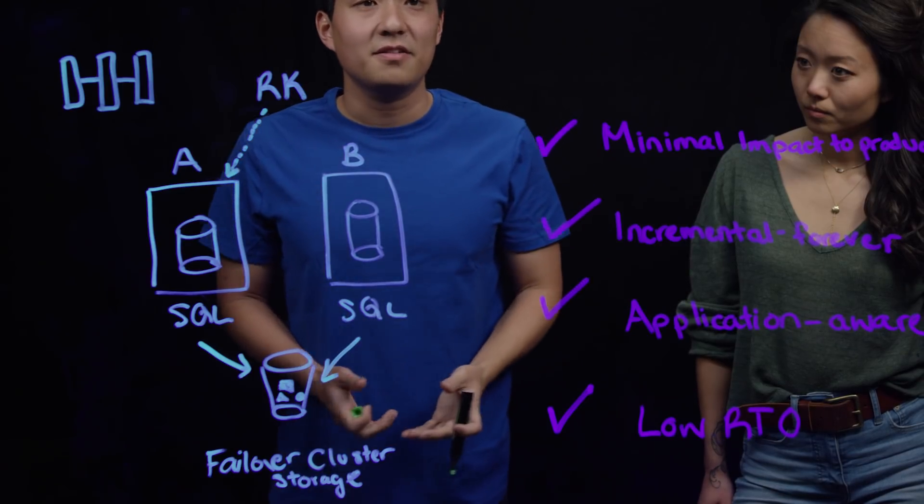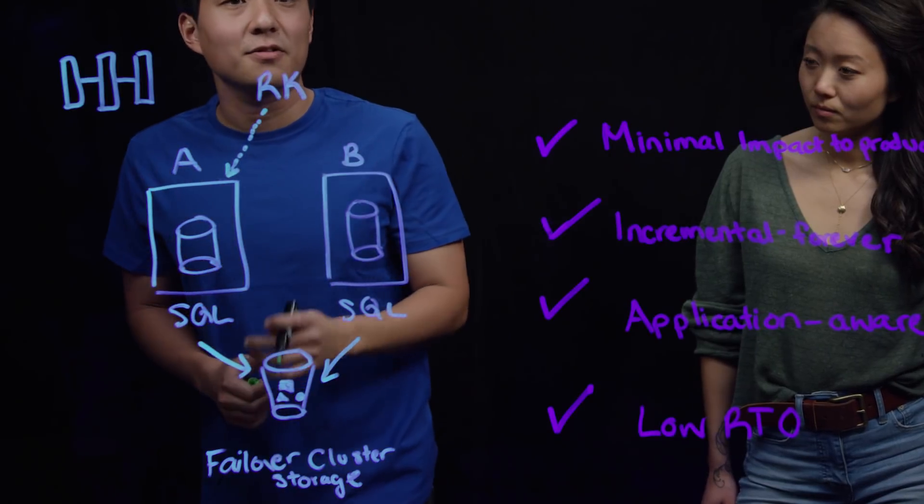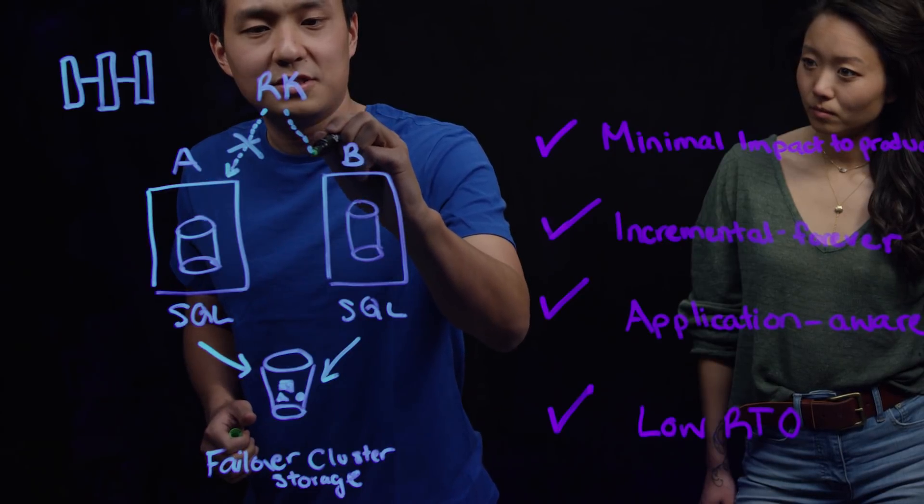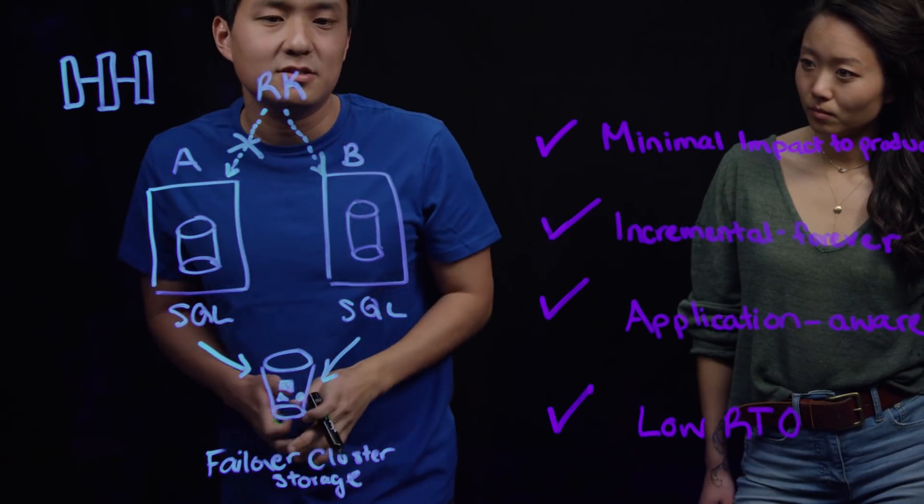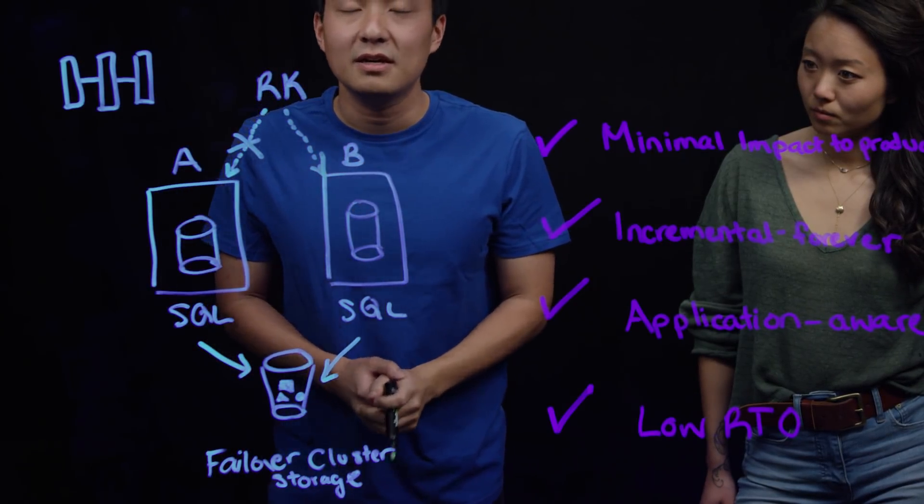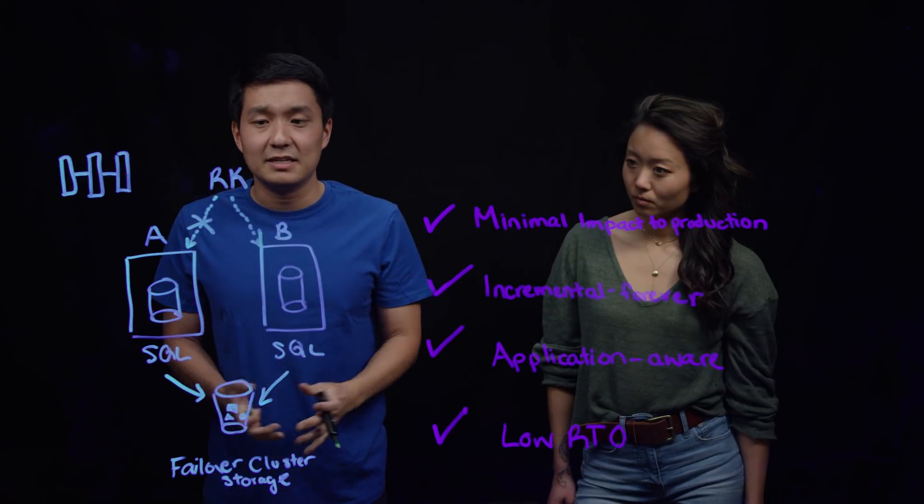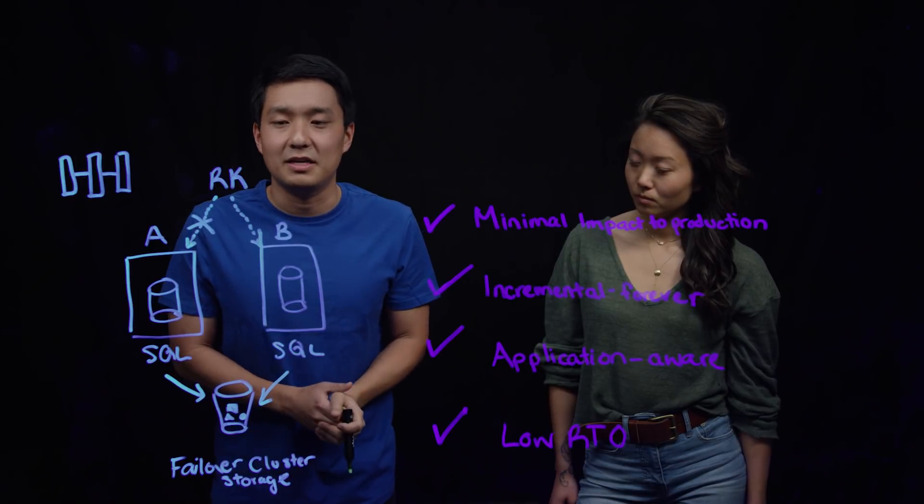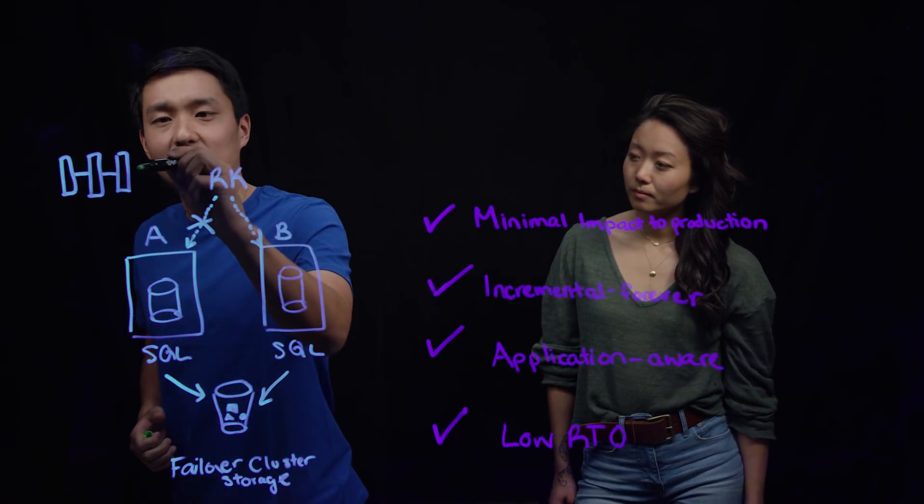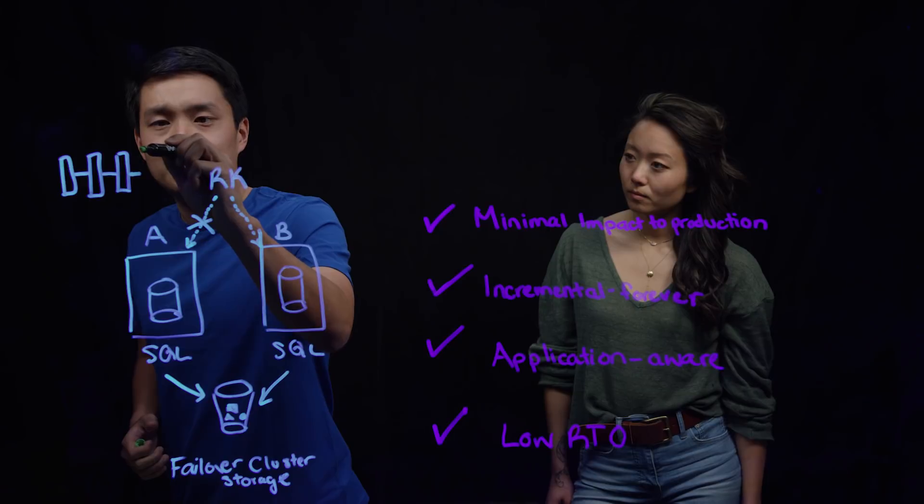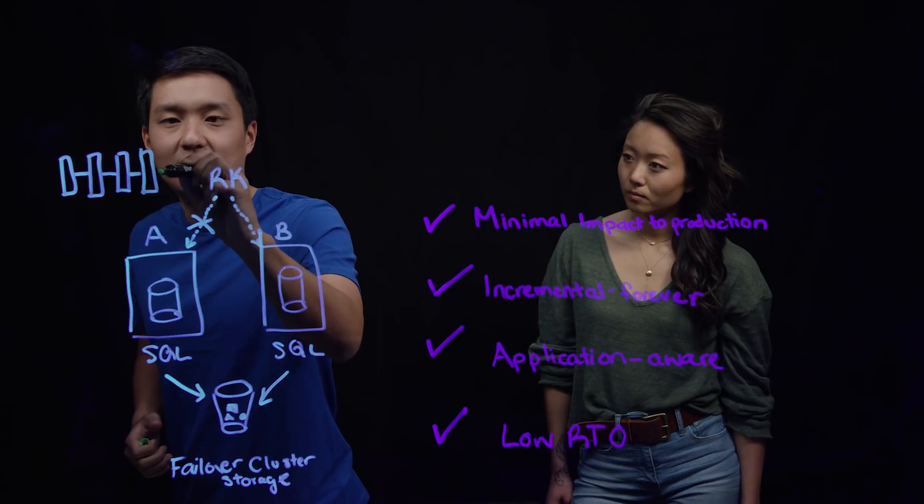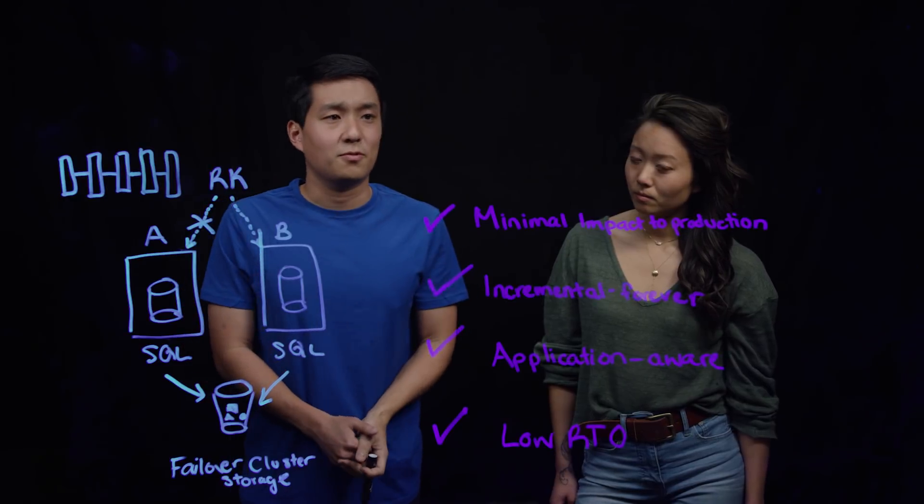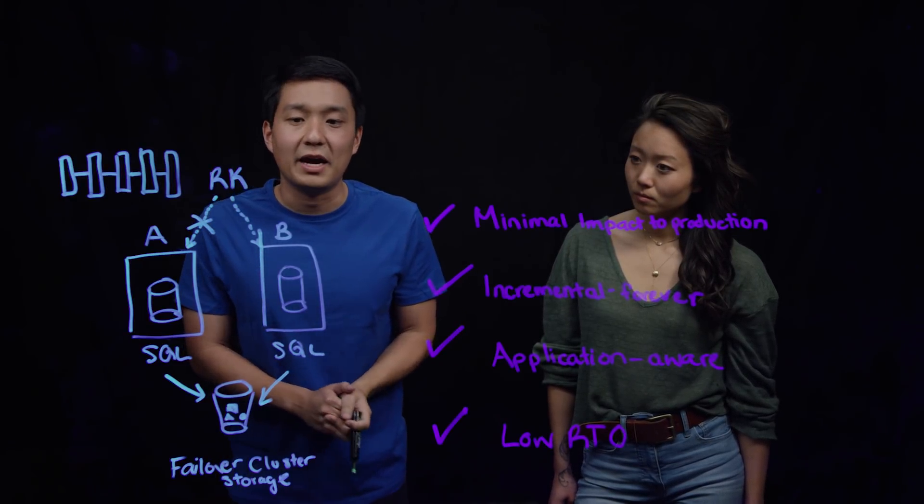Now, in the case of a Failover Cluster, we may no longer be able to communicate with node A anymore. We will switch our communication to the database at node B. Since we have detected these databases as part of a Failover Cluster, we treat them as one entity. And so, we can seamlessly continue taking snapshots and transaction log backups as normal. In this case, no new full backup is required and no manual steps are needed on the user's behalf.